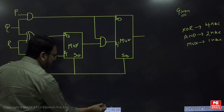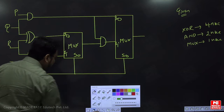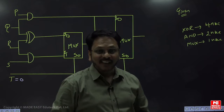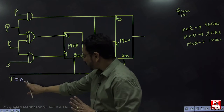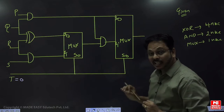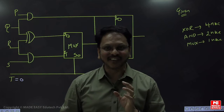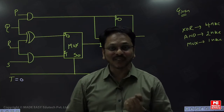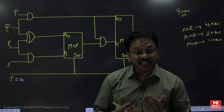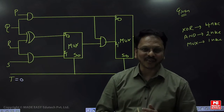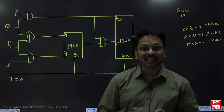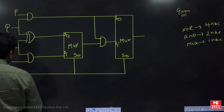Let's consider two conditions: t equal to zero and t equal to one. First we will check the t=0 case and see how much time the overall operation takes to get the result. Then we'll go for t=1 and do the same analysis. In both cases, we will find which one gives the maximum delay, because that is what the question is asking.